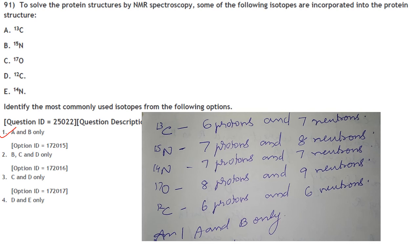To solve a protein structure by NMR spectroscopy, certain isotopes are incorporated. Nuclei with an odd number of protons or neutrons show the magnetic properties required for NMR; nuclei with even numbers of both do not. C12 has 6 protons and 6 neutrons and will not show the required magnetic properties, so any option containing C12 is incorrect. The correct isotopes are C13 and N15 — A and B only. Answer is option 1.